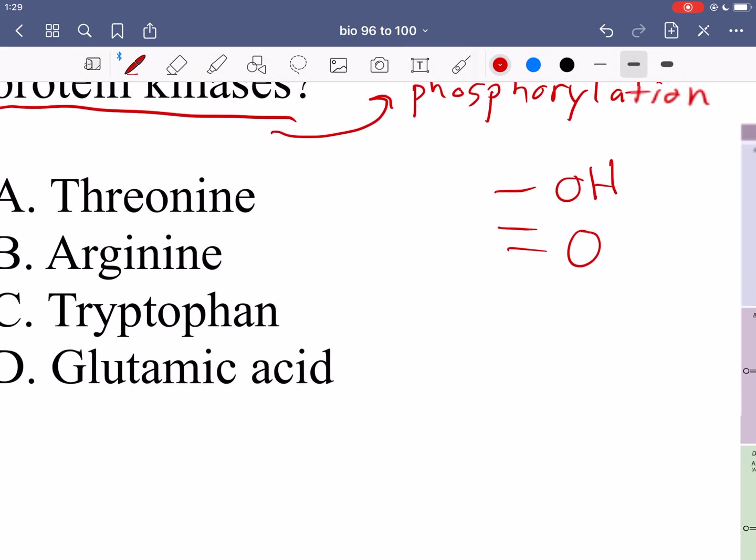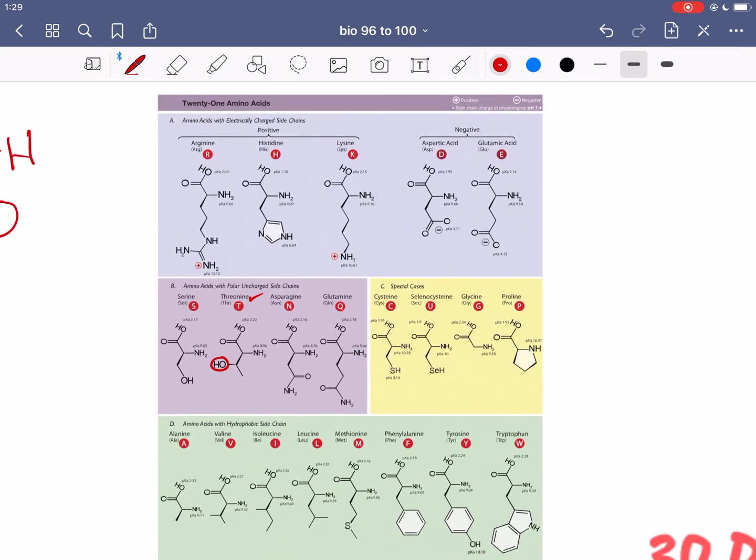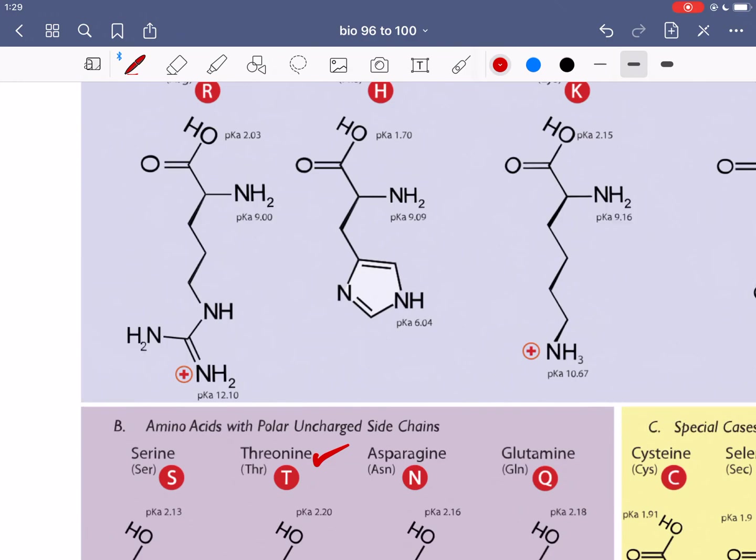What else do we have? Arginine, tryptophan, glutamate. Arginine, we have a positively charged center over here distributed to the other nitrogen as well but in any case that positive charge is not going to be phosphorylated. Something with a charge like that is not going to have something else attached to it. That phosphate group is not going to attach. So arginine, no.